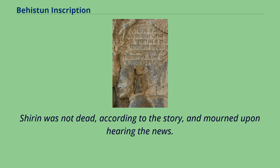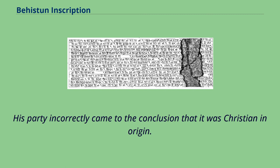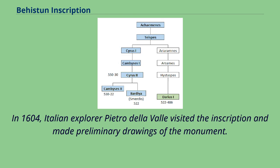Shirin was not dead according to the story, and mourned upon hearing the news. In 1598, the Englishman Robert Shirley saw the inscription during a diplomatic mission to Persia on behalf of Austria and brought it to the attention of Western European scholars, though his party incorrectly concluded it was Christian in origin. French General Gardanne thought it showed Christ and his twelve apostles, and Sir Robert Ker Porter thought it represented the Lost Tribes of Israel and Shalmaneser of Assyria. In 1604, Italian explorer Pietro della Valle visited the inscription and made preliminary drawings of the monument.